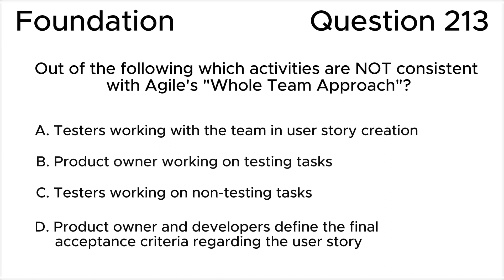Out of the following, which activities are not consistent with Agile's whole team approach? A. Testers working with the team in user story creation. B. Product owner working on testing tasks. C. Testers working on non-testing tasks. D. Product owner and developers define the final acceptance criteria regarding the user story.